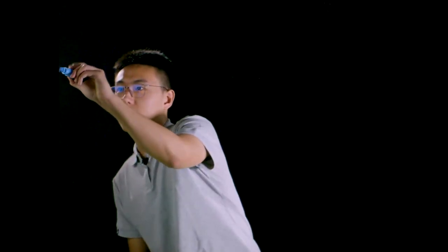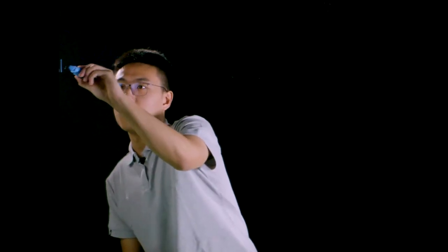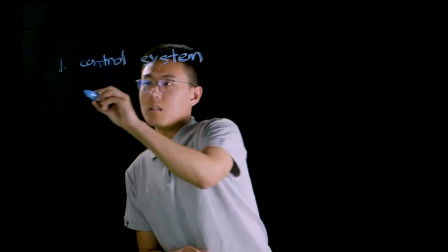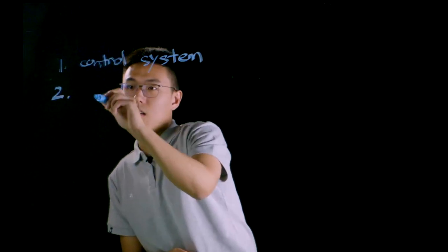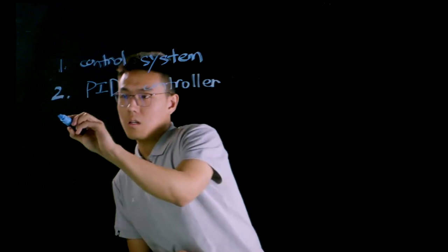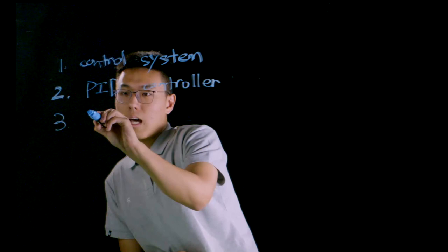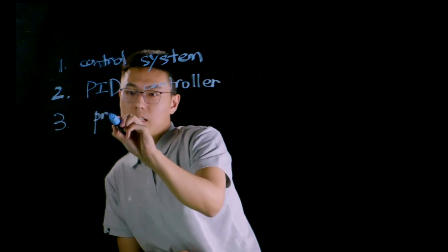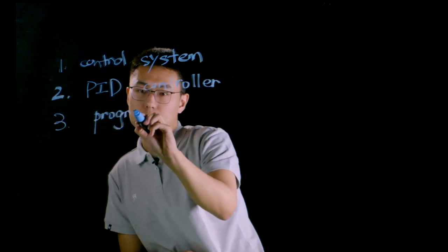To achieve accurate object tracking, we need to learn three important things. The first thing is automatic control system. The second thing is what is PID controller? And the last thing is how to implement the PID controller in Scratch programming.